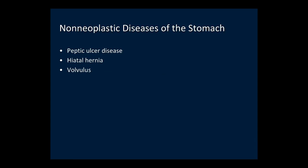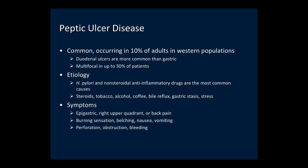We'll turn our attention to non-neoplastic diseases of the stomach: peptic ulcer disease, hiatal hernia, and volvulus. Peptic ulcers are common, occurring in about 10% of adults in Western populations. These are benign ulcers that occur more commonly in the duodenum than in the stomach and are multifocal in up to 30% of patients. The two most common causes are H. pylori infection and NSAID therapy. Other etiologies include steroids, tobacco, alcohol, coffee, bile reflux, gastric stasis, and stress.